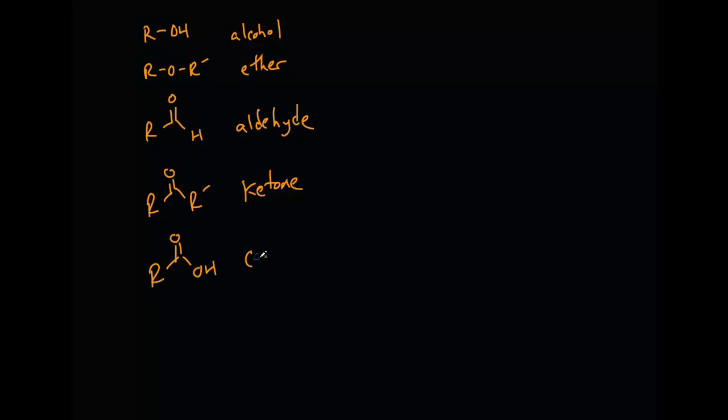So carboxylic acid. And this is kind of like a combination carbonyl with an alcohol. So the C double bond O-OH. Next we have an ester, which is kind of like a carboxylic acid, but take away the H and put in a carbon group. You have an ester.